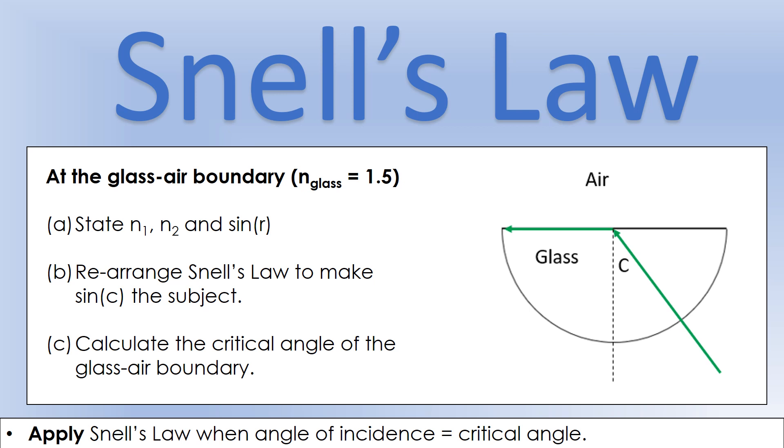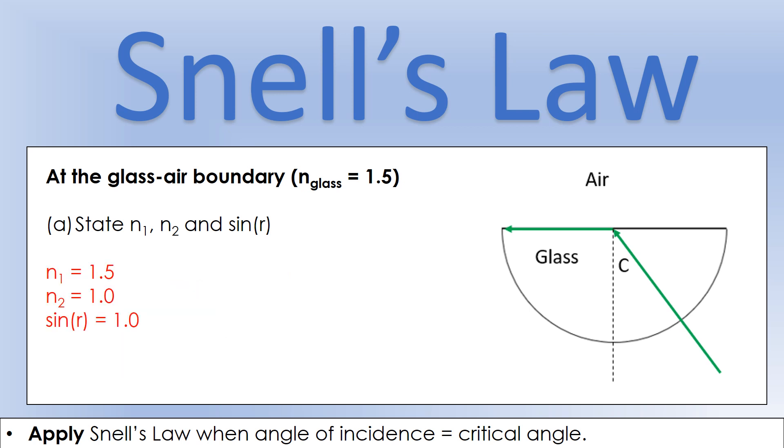I'm assuming you've had a crack, so let's see how you've done at calculating your critical angles. It's starting in glass, so n1 is 1.5. It's trying to go into air, so n2 is 1.0. The angle of refraction we can see is 90 degrees, so therefore sine r is 1. If you type in sine of 90, that comes out as 1.